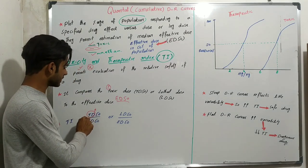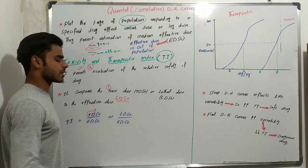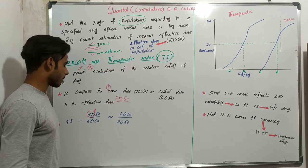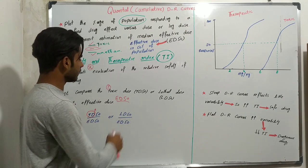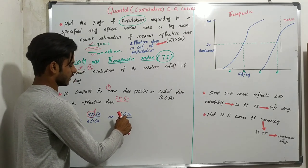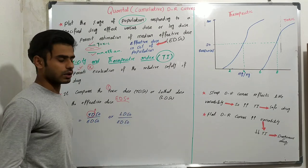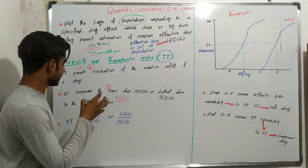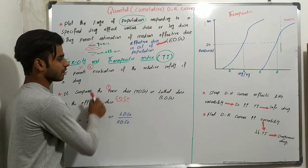TD50 is the dose of a drug that is toxic in 50 percent of the population. ED50 is the dose of a drug that is effective in 50 percent of the population. LD50 stands for the lethal dose — the dose of a drug that is lethal in 50 percent of the population. By putting these values into the formula we can calculate the therapeutic index.